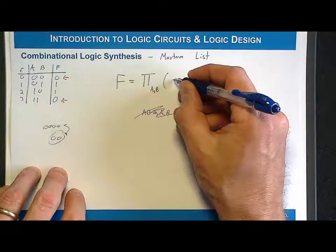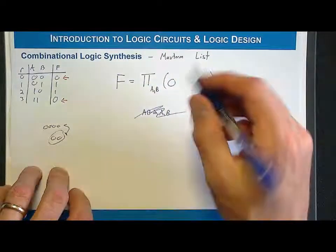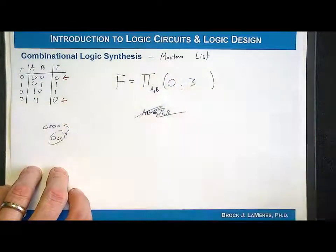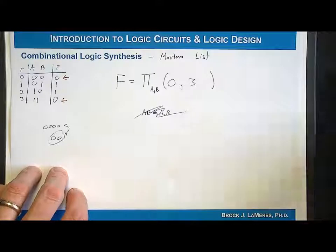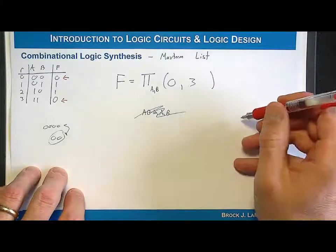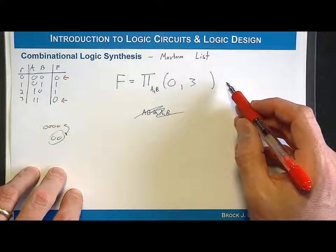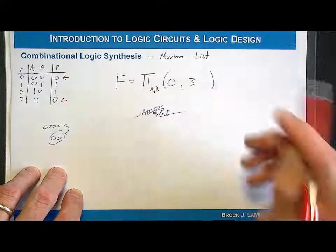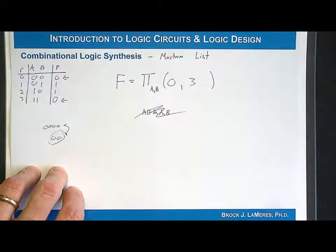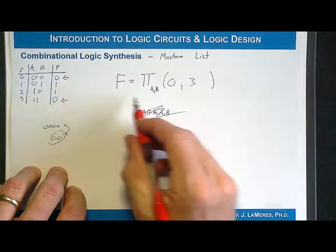So in this situation, it will be row 0, and then it will be row 3. Now let's compare that to a min-term list, which is kind of the same approach, except that we list the row numbers corresponding to an output of a high. And they're equivalent to each other.